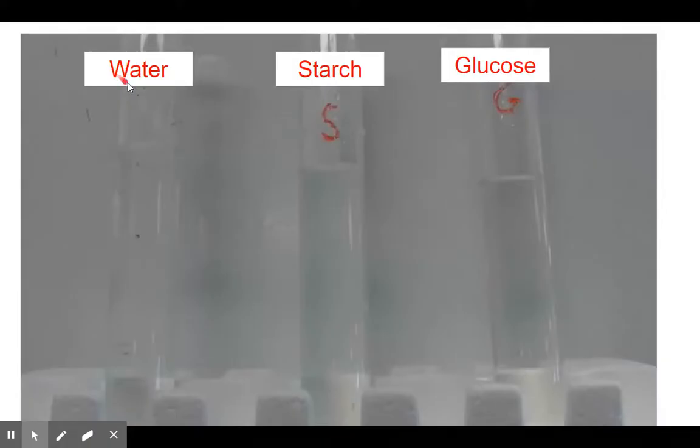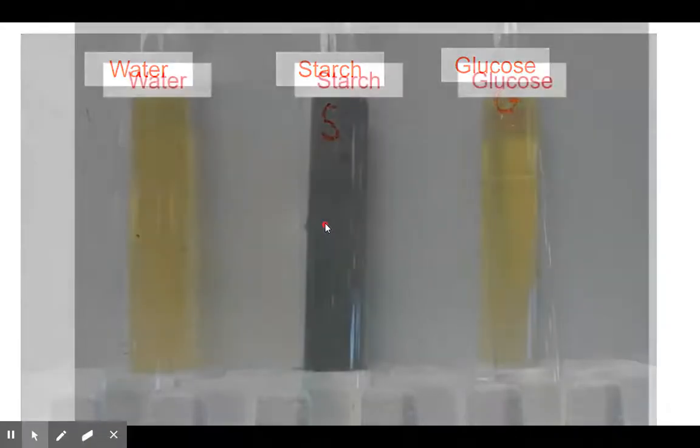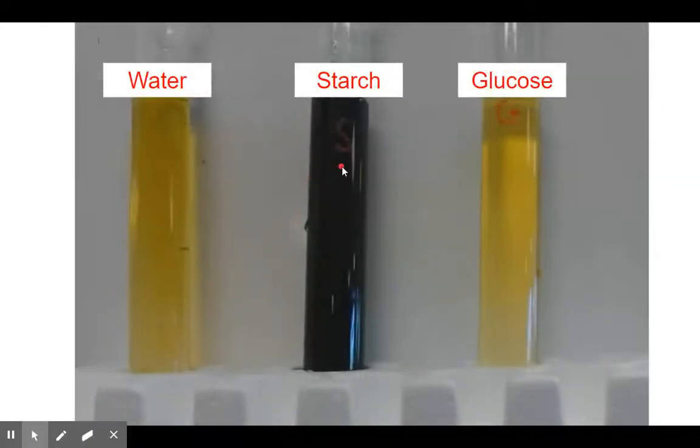Here again we have our water, starch, and glucose. We're going to add it to all three and test for the presence of starch. And you guessed it, guys, there is starch in the starch. So we know that this works great. The reason it's a lighter yellow color, just like before with Benedict's solution, is because it got diluted. But there is no lighter color here—that is clearly a dark purple or black color. So the starch indicator, iodine, works great.